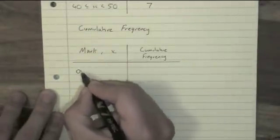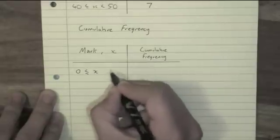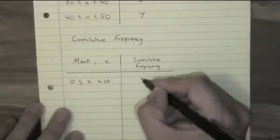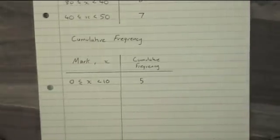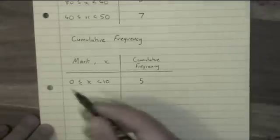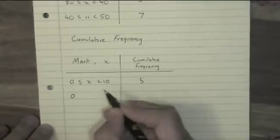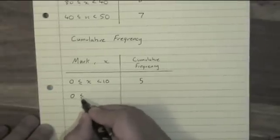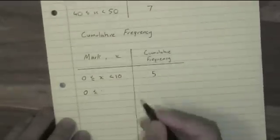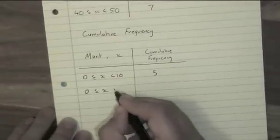The amount of people who scored between 0 and 10. As you can see from the table here, you get five people. Now often on a question the classes will be drawn in for you, but each one always starts at zero and goes up to the next number. So the next one is going to be between 0 and 20.